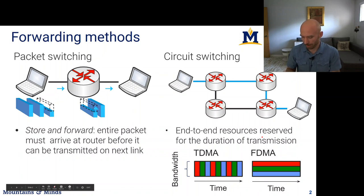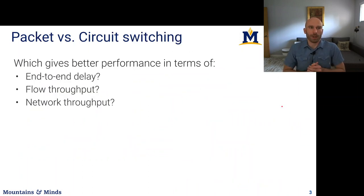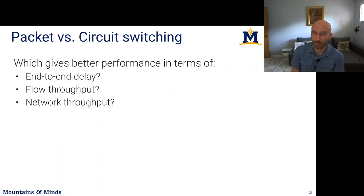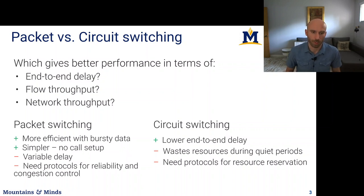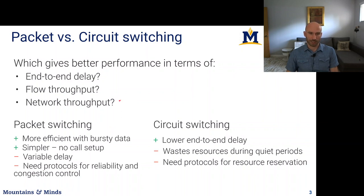So if you think about performance — which method gives better end-to-end delay, better flow throughput, and better network throughput? Packet switching is more efficient for bursty data. A flow that sometimes sends less data and sometimes more would need to reserve bandwidth for the maximum rate under circuit switching, leaving a lot of bandwidth wasted. With packet switching you use as much bandwidth as you're actually sending, so multiple bursty flows can work around each other effectively.